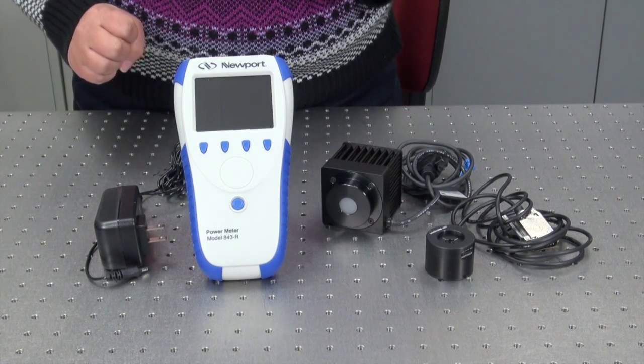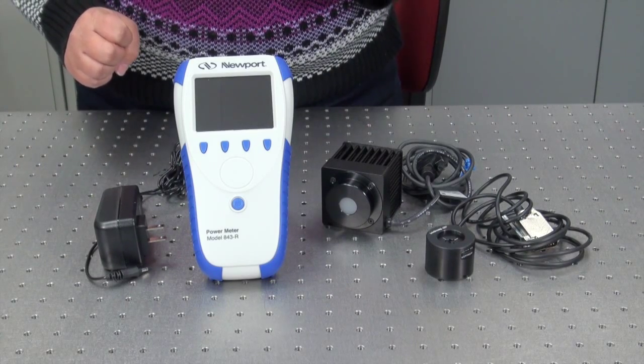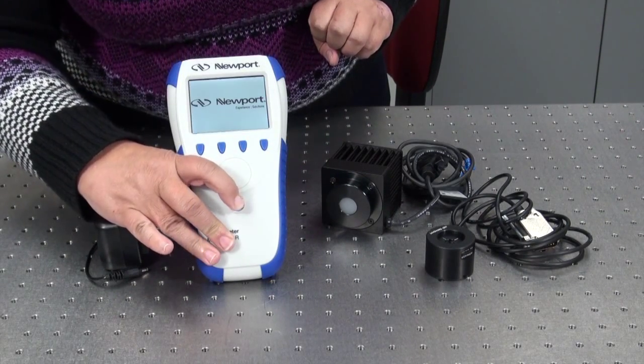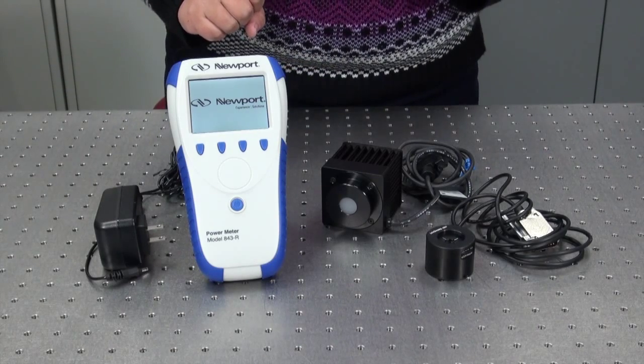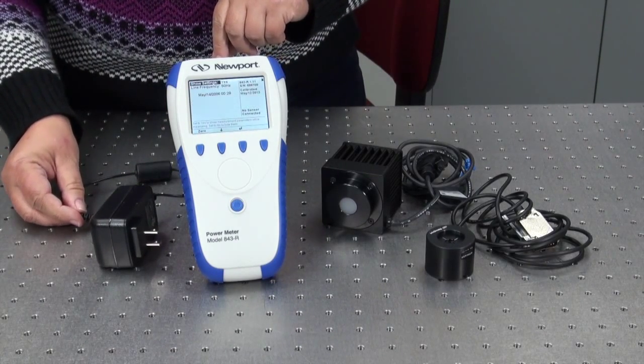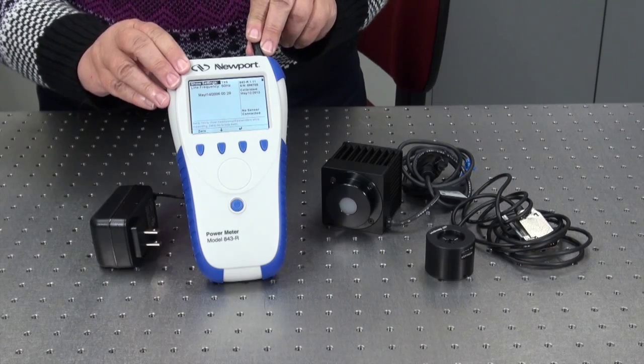Setting up your 843-R power meter for operation is quick and easy. Turn on the 843-R by holding down the blue power button until the monitor screen activates. If the meter is not charged, make certain to plug in the power supply.